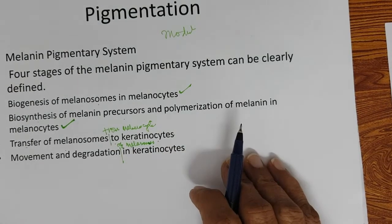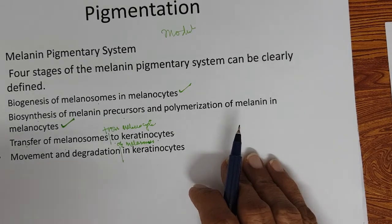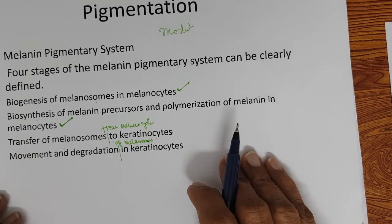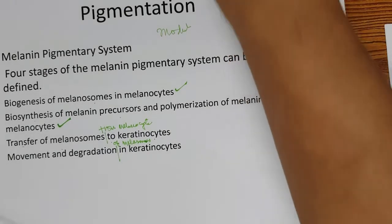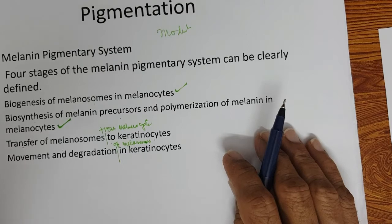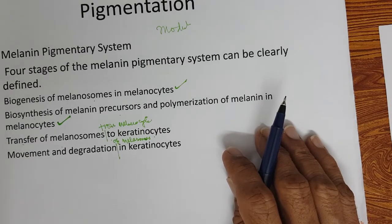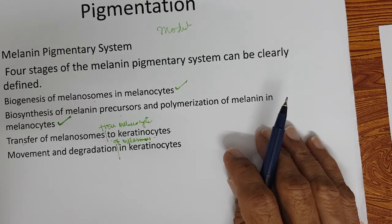Once melanosomes are transferred to keratinocytes, degrading them faster is another area where actives can work. We will now go to skin color modulation actives. Although I initially said I would not discuss prescription medicine actives, because skin blemishes are a very important field, I am going to discuss all actives including those used in pharmaceuticals.